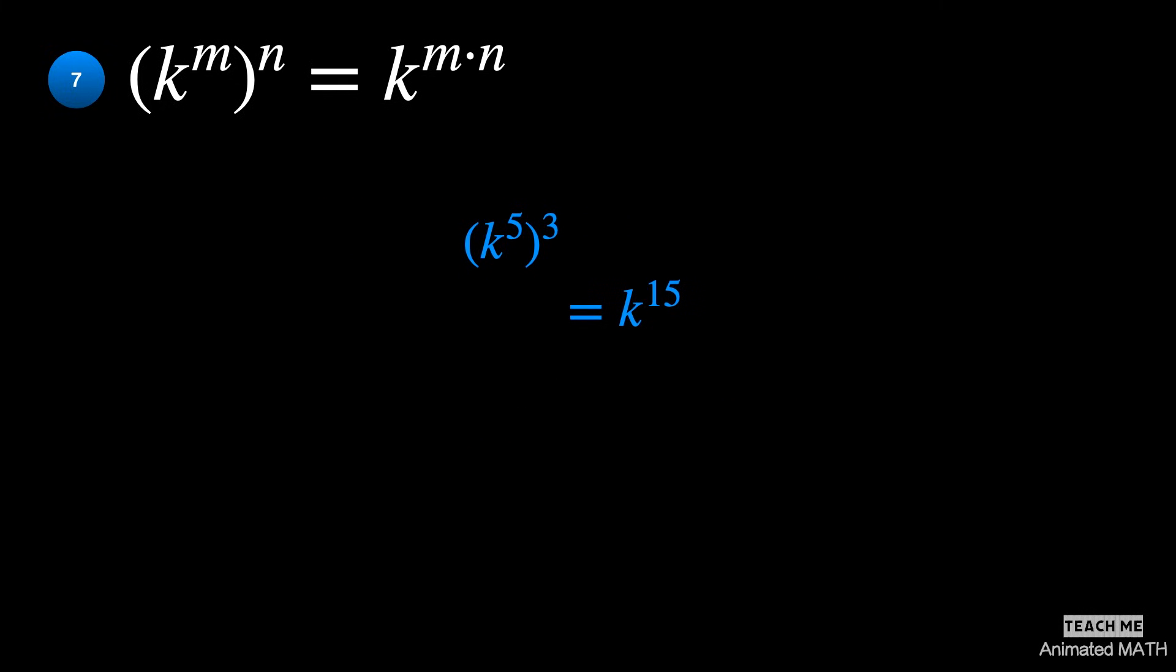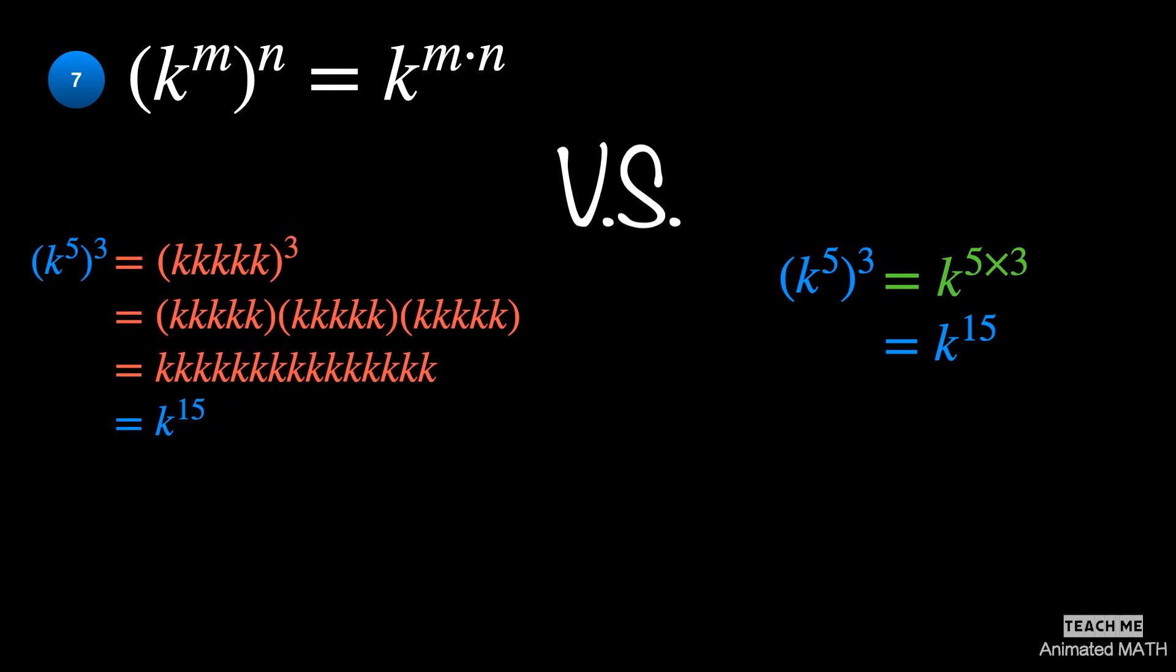Using the seventh property, you can write it as k raised to the power of 5 times 3, or k to the 15th power.